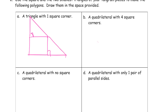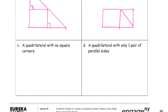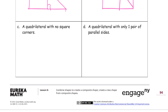A quadrilateral with four square corners is going to be a rectangle — that's the definition of a rectangle. I'll take the square and one of the triangles placed like this, and then the other triangle fits so the two triangles together make another square. There you've got your rectangle.